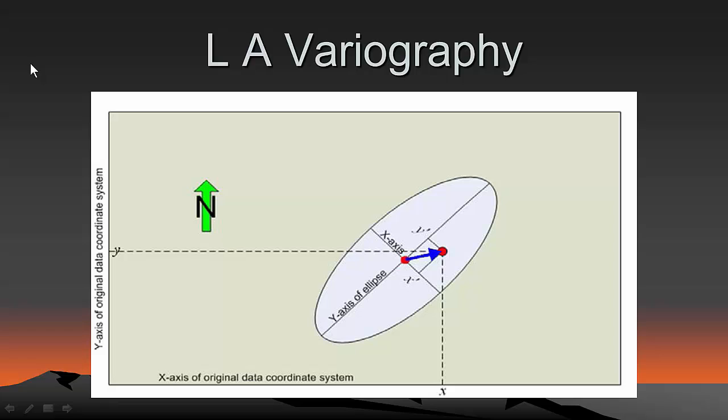What about local anisotropy variography? Well, when you do variography, this blue thing here is what we call our separation vector. Remember, we're pairing two drill hole composites, one at the tail end of the separation vector, one at the head of the separation vector. And then we measure the distance between the two drill hole composites and the direction. And the direction is generally with regard to the x and y-axis of your coordinate system. And then we calculate the variogram value from those two drill hole samples and then go on to the next two.